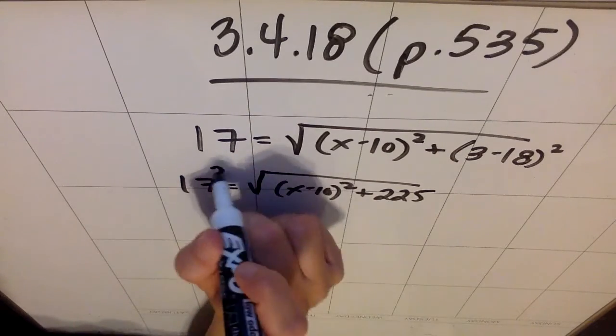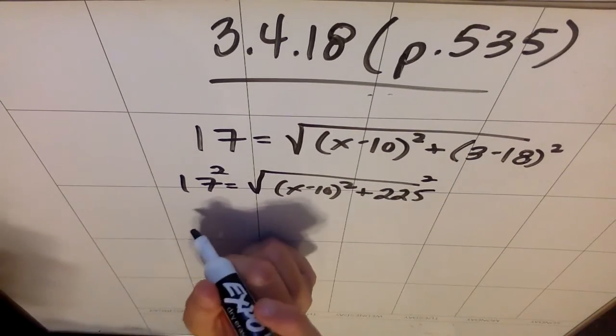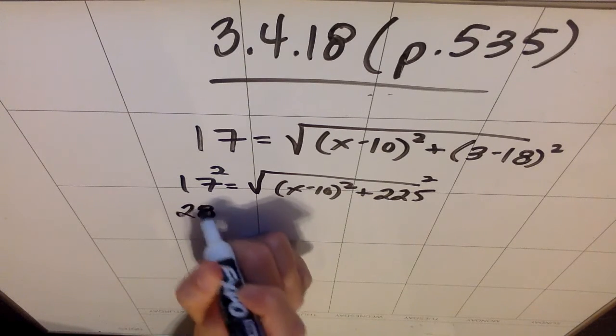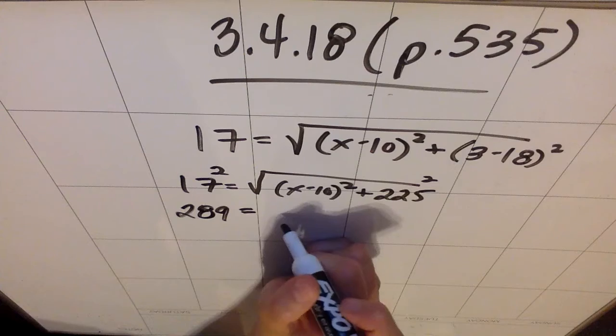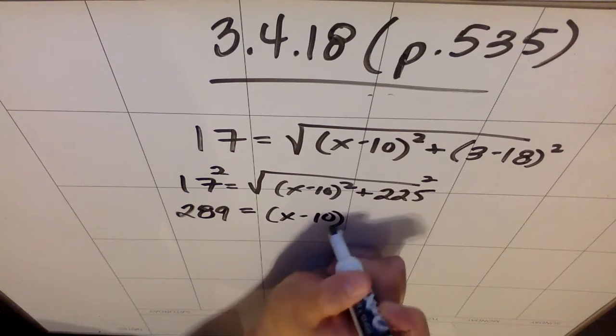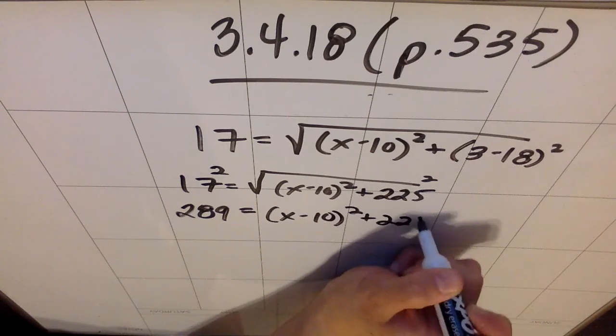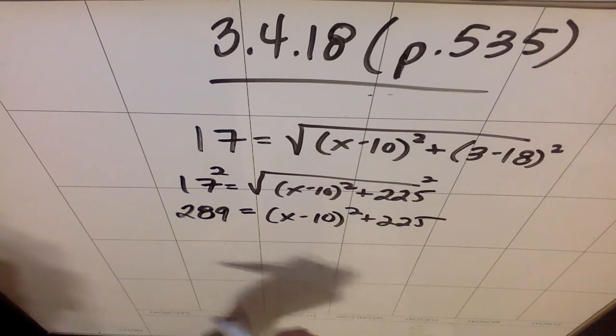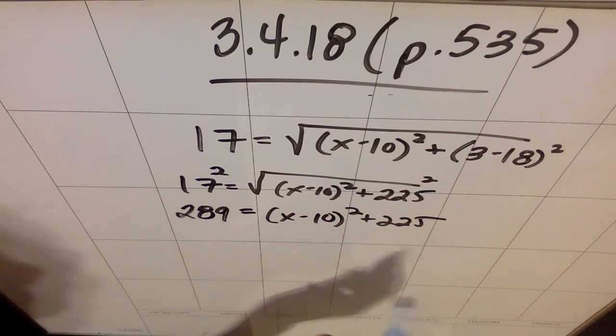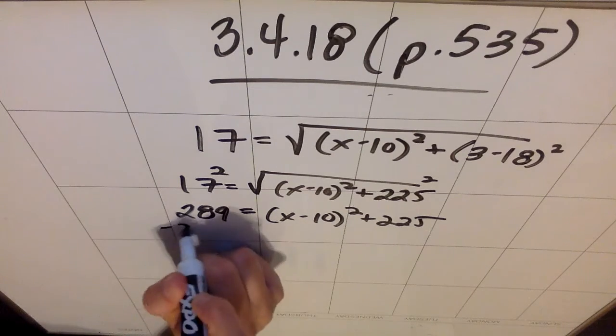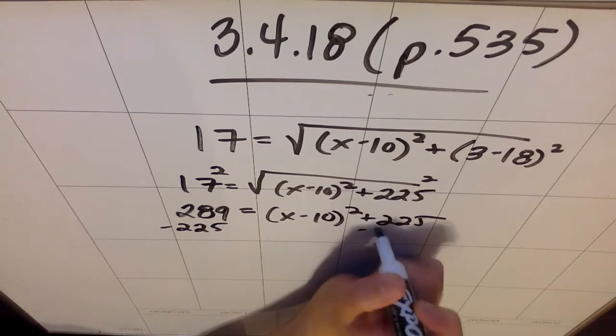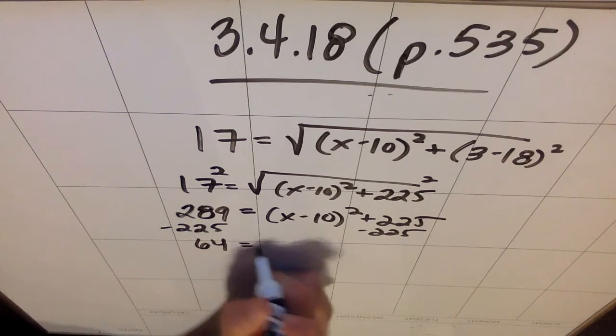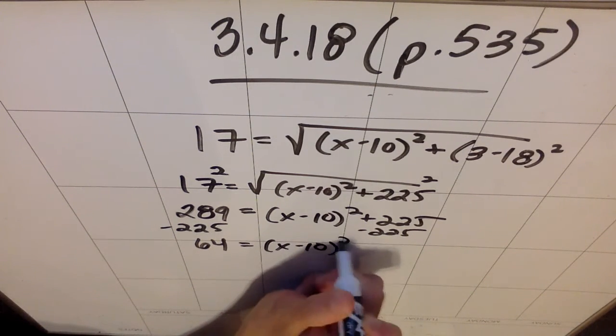So, when you go to solve, you're going to square both sides to get rid of the root. Your 17 squared should give you 289, and that should equal (x - 10)² plus 225. Now, I could actually foil all this out and try and factor, but I'm going to argue it's easier to subtract instead. So, if I subtract the 225, I'm going to end up getting 64 equals (x - 10)².